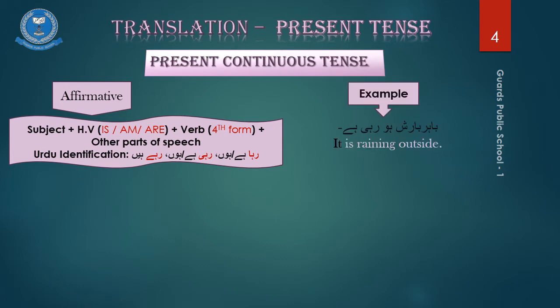For example, bahir baarish ho rahi hai. It is raining outside. Let me notify you one thing here, that if in a sentence a subject is not known or not mentioned, we use the pronoun it or they in place of a subject in a sentence.